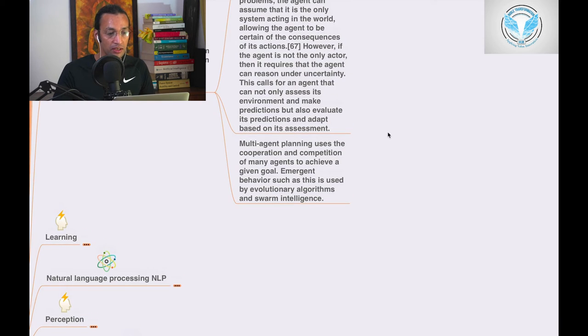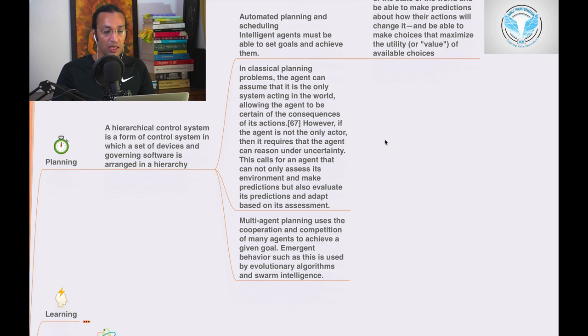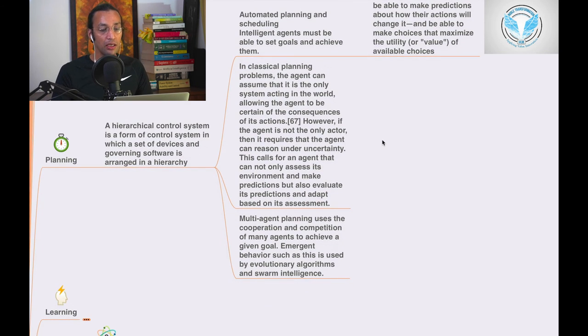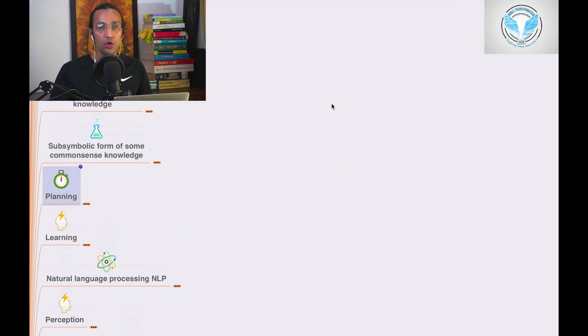So planning involves a hierarchy where devices and software are arranged in a hierarchical manner. Then automated planning is where the agent achieves value goals through optimization. Classical problems have limitations, and multi-agent planning is used with evolutionary algorithms and other methods.